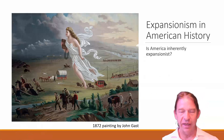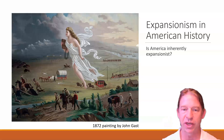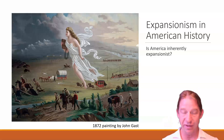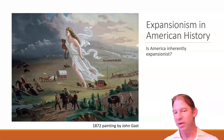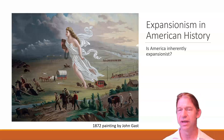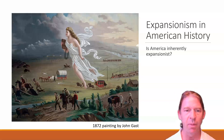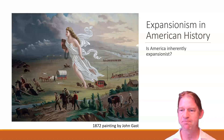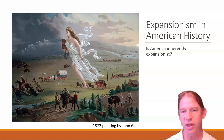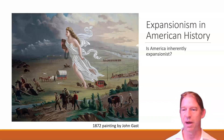Here you see a painting by John Gast from 1872, a very famous depiction of what some have referred to as Manifest Destiny, relating to the American expansion into the Western territories. Take a second and examine this painting and see if you can come up with any themes — anything that stands out as you observe and take apart this painting. What do you see here, and what does this tell you about American history?